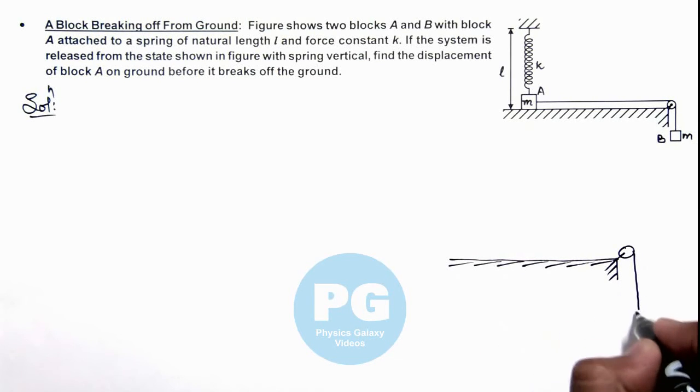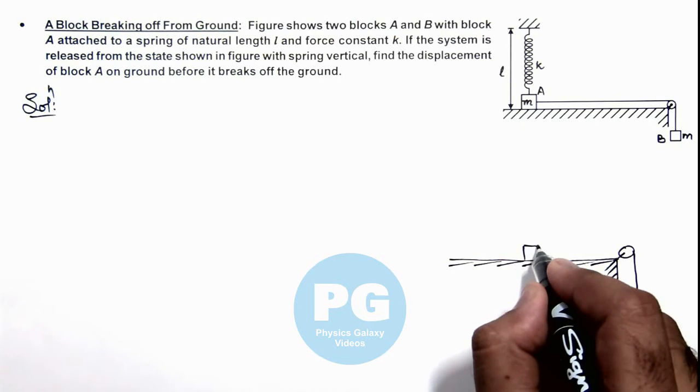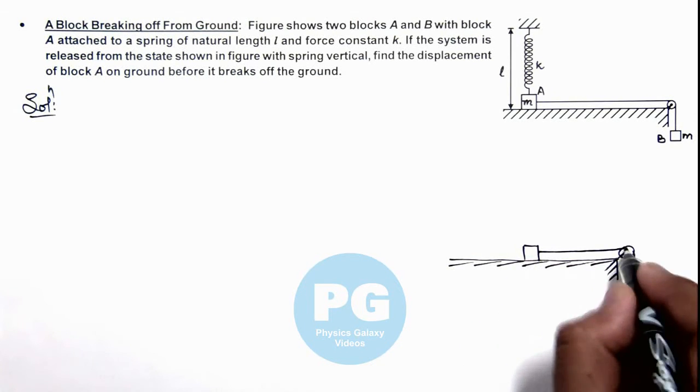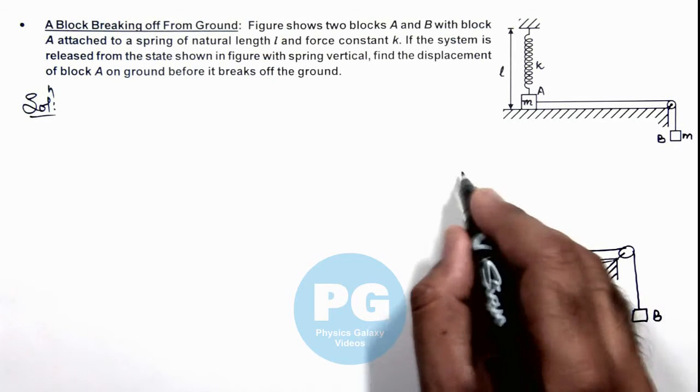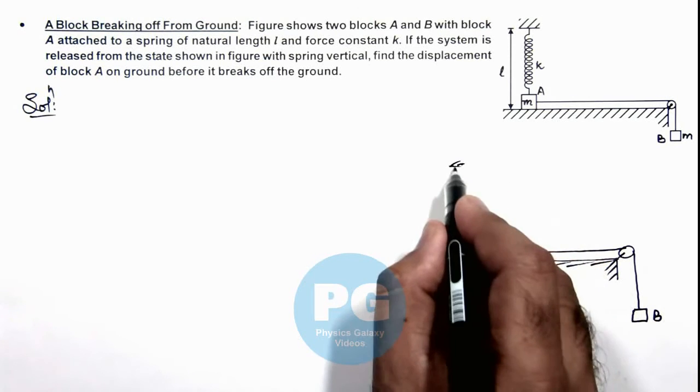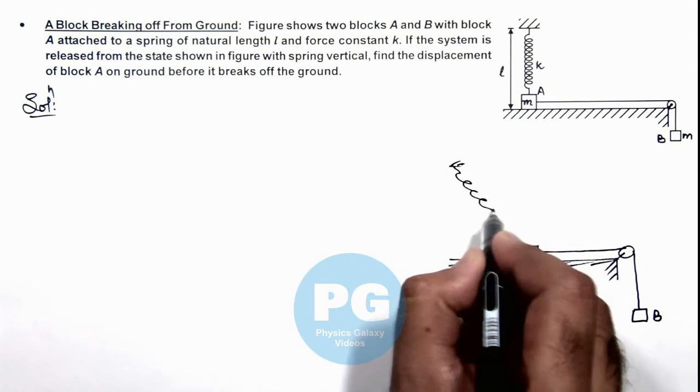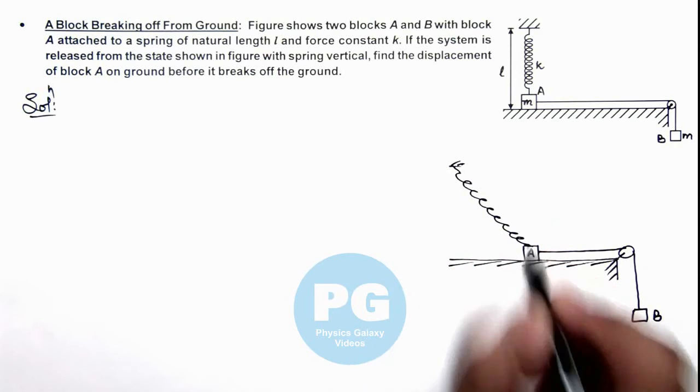Say if block B has fallen by some distance and block A is also displaced toward right by some distance, due to which we can see the spring gets elongated and gets inclined like this.